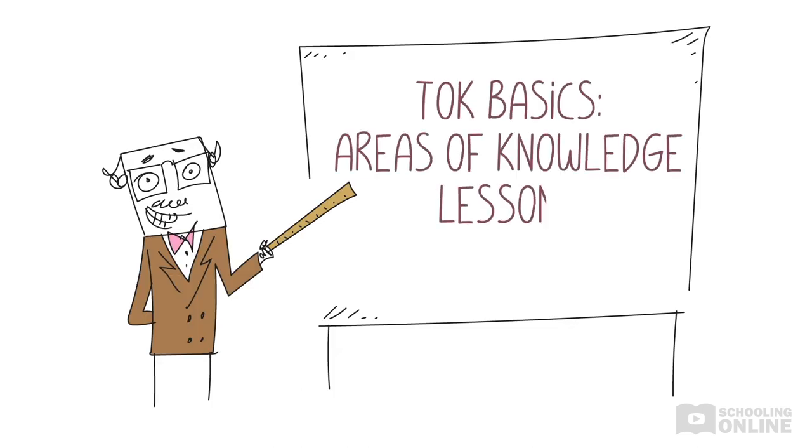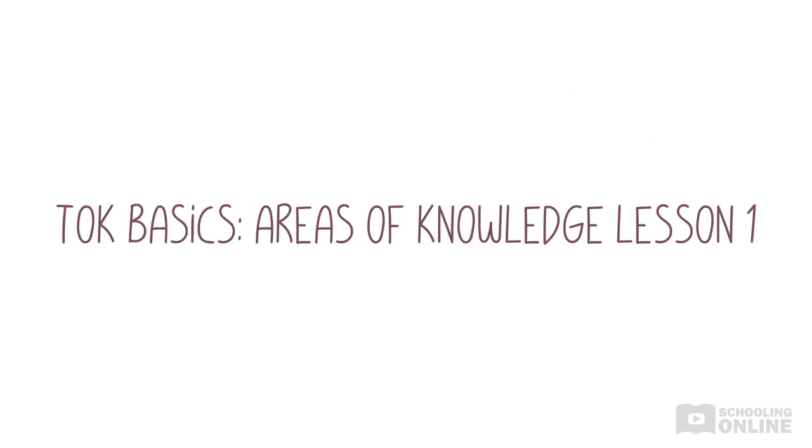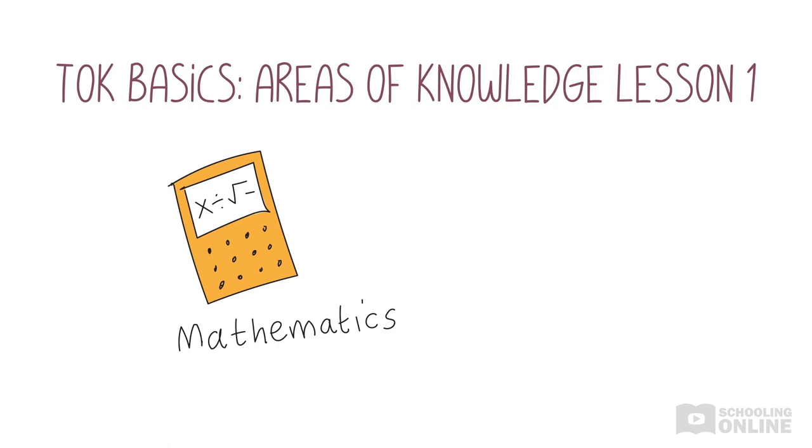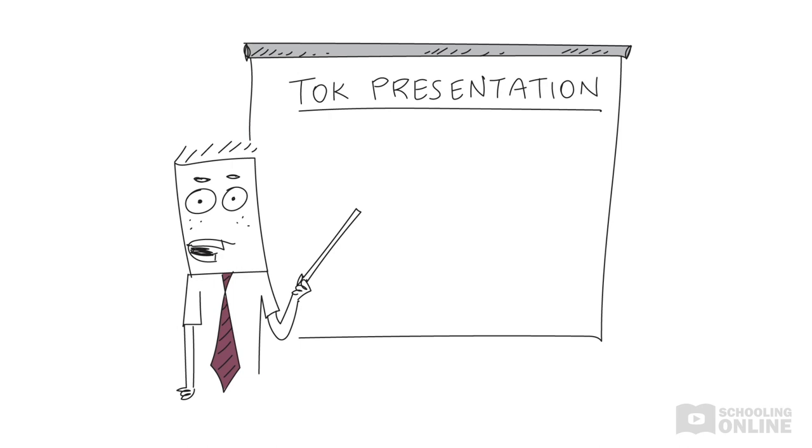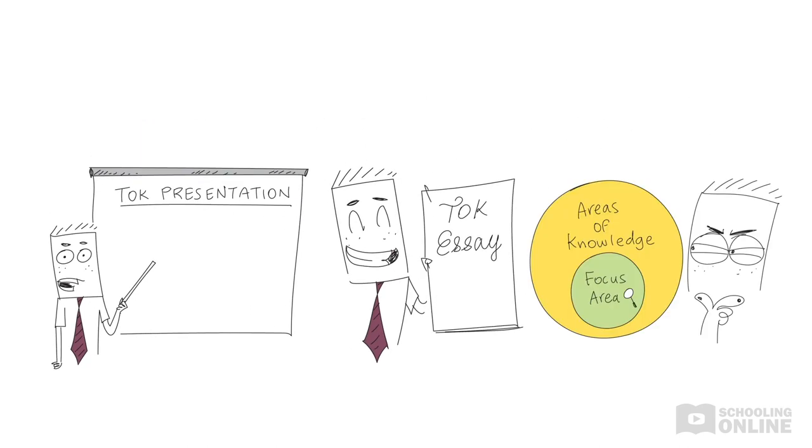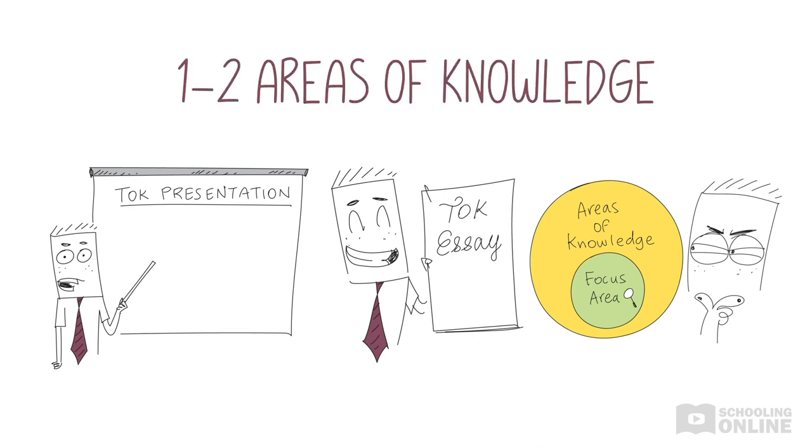This lesson will go through the areas of knowledge, which is how the IB breaks up and categorizes all human knowledge. In lesson one, we will go through two areas of knowledge: mathematics and the natural sciences. In your TOK presentation and TOK essay, you'll be asked to narrow down your topic and focus on one or two areas of knowledge, depending on your presentation question or essay title.